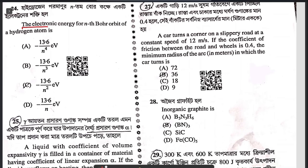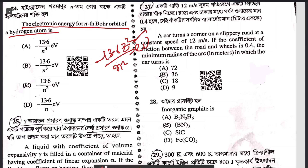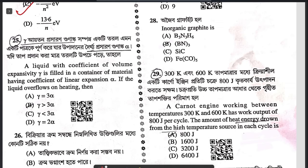Question 24: the electronic energy of the nth orbit of a hydrogen atom is -13.6Z²/n² electron volts. Put Z = 1 and you will get answer C.